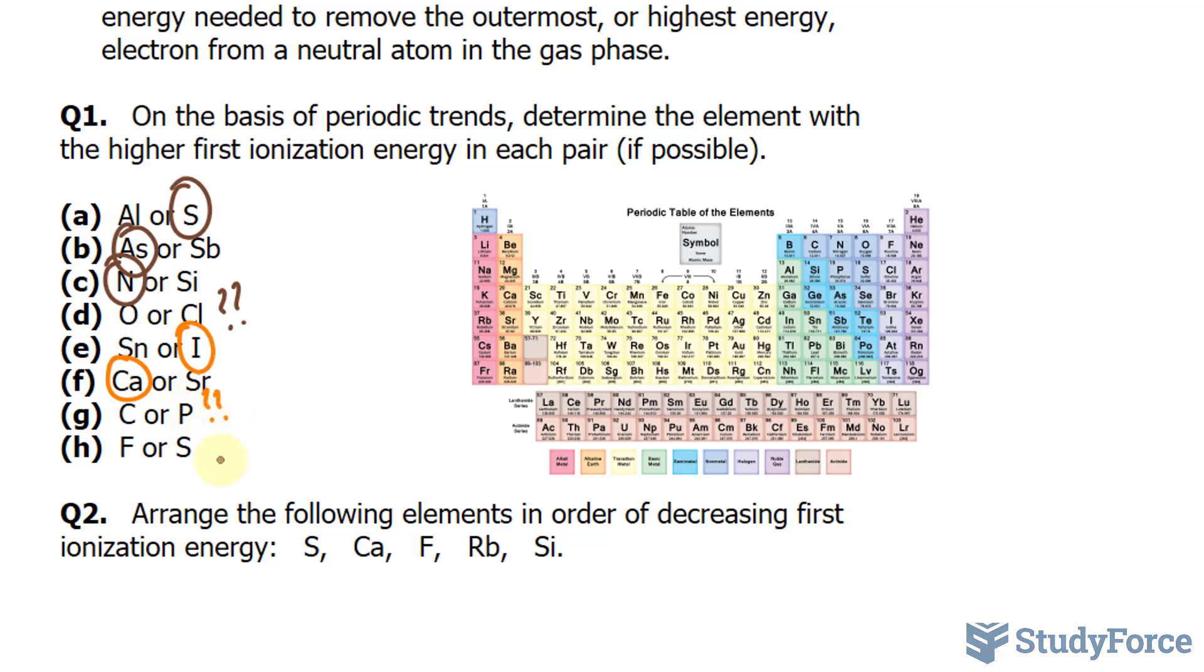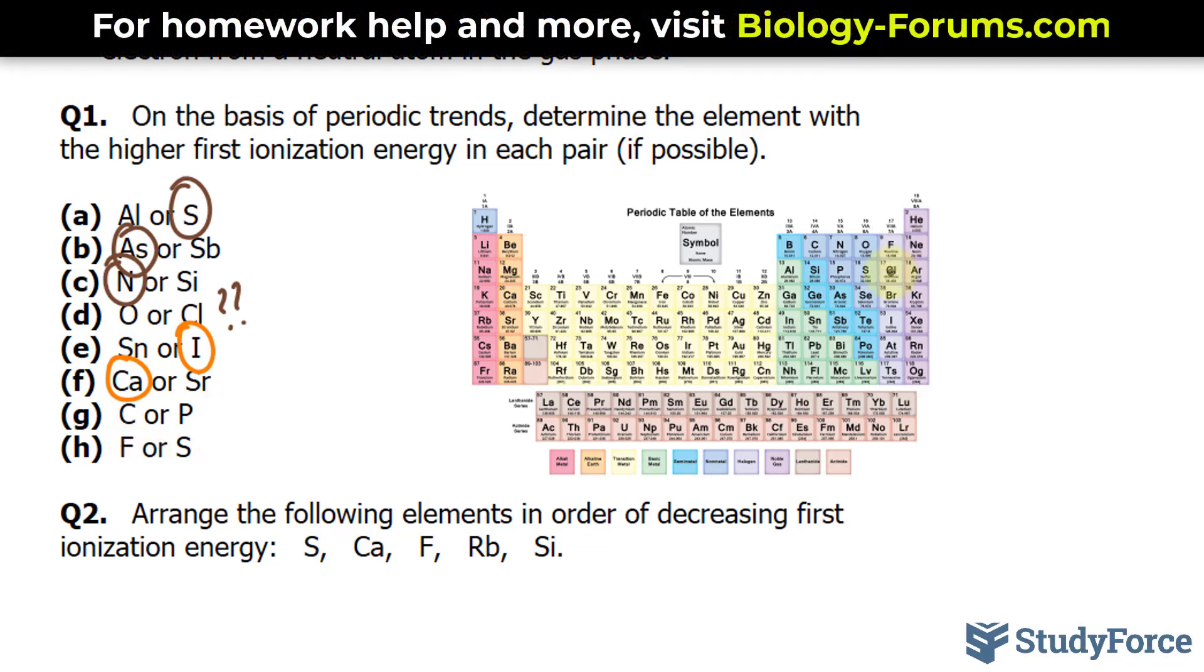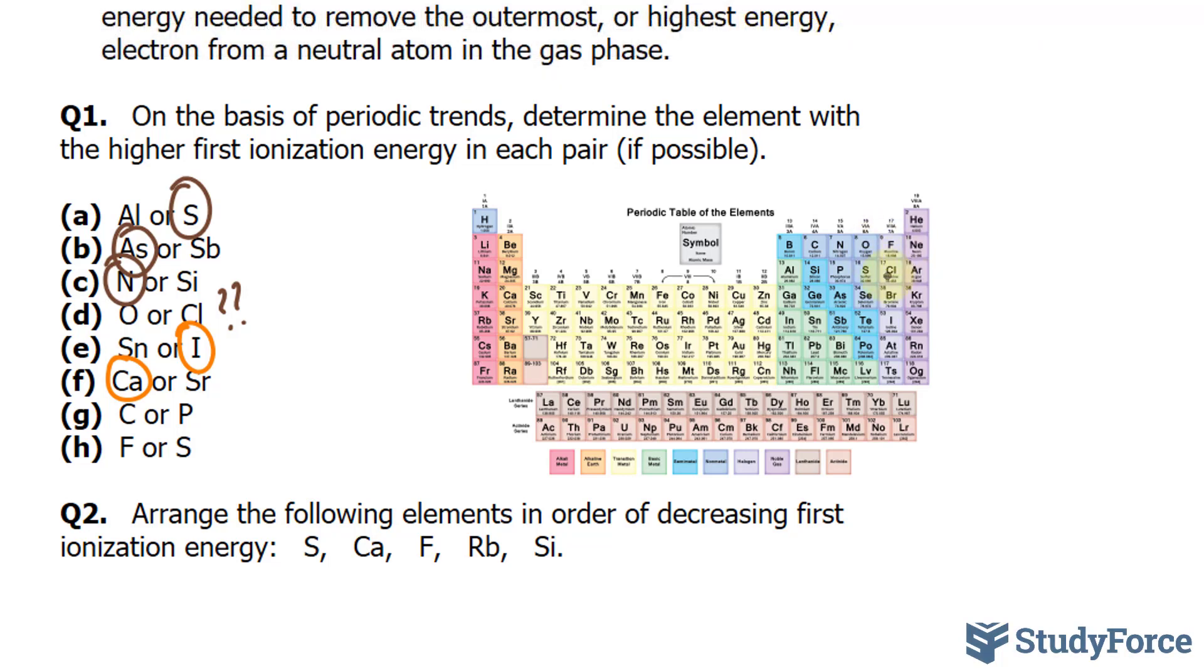Finally, we will compare fluorine to sulfur. Fluorine is one column up and also to the right of sulfur. So right away we know that fluorine will have the higher ionization energy.